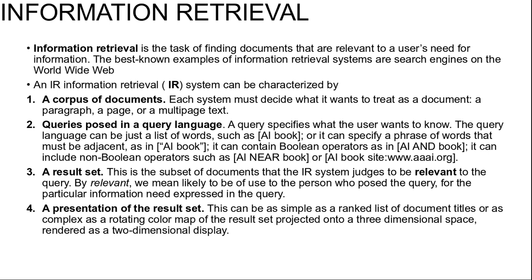An Information Retrieval, or IR system can be characterized by first, a corpus of documents. A system must decide what it wants to treat as a document — a paragraph, a page, or a multi-page text. Second, queries posted in a query language. A query specifies what the user wants to know. The query language can be just a list of words such as 'AI book', or it can specify a phrase of words that must be adjacent.